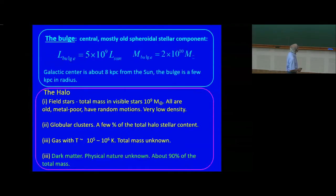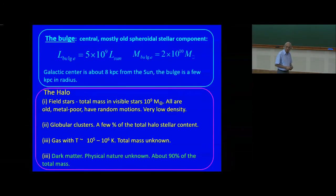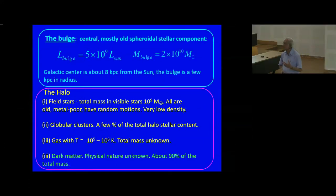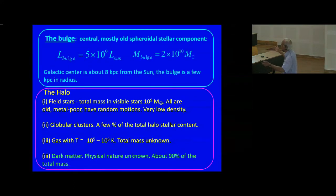Now let us look at the bulge. It is right there at the center. These are very old stars born when the galaxy itself was formed. It has a mass of about 2×10¹⁰ solar masses and a luminosity of about 5×10⁹ solar luminosities, meaning most of the stars in the bulge have roughly solar luminosity.